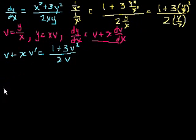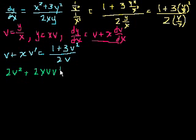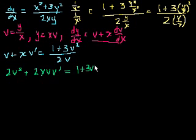Now let's see what we can do. This is where we put our algebra hat on and try to simplify until it's a separable equation in v. Let's multiply both sides of this equation by 2v. We'll get 2v squared plus 2xvv prime is equal to 1 plus 3v squared.